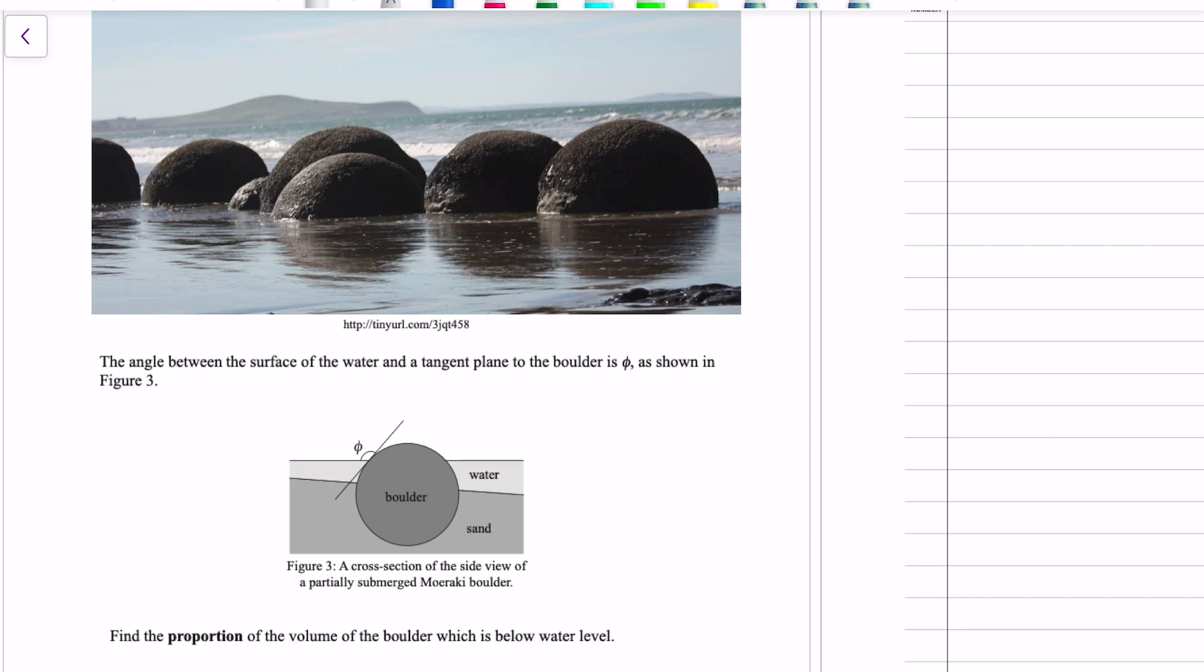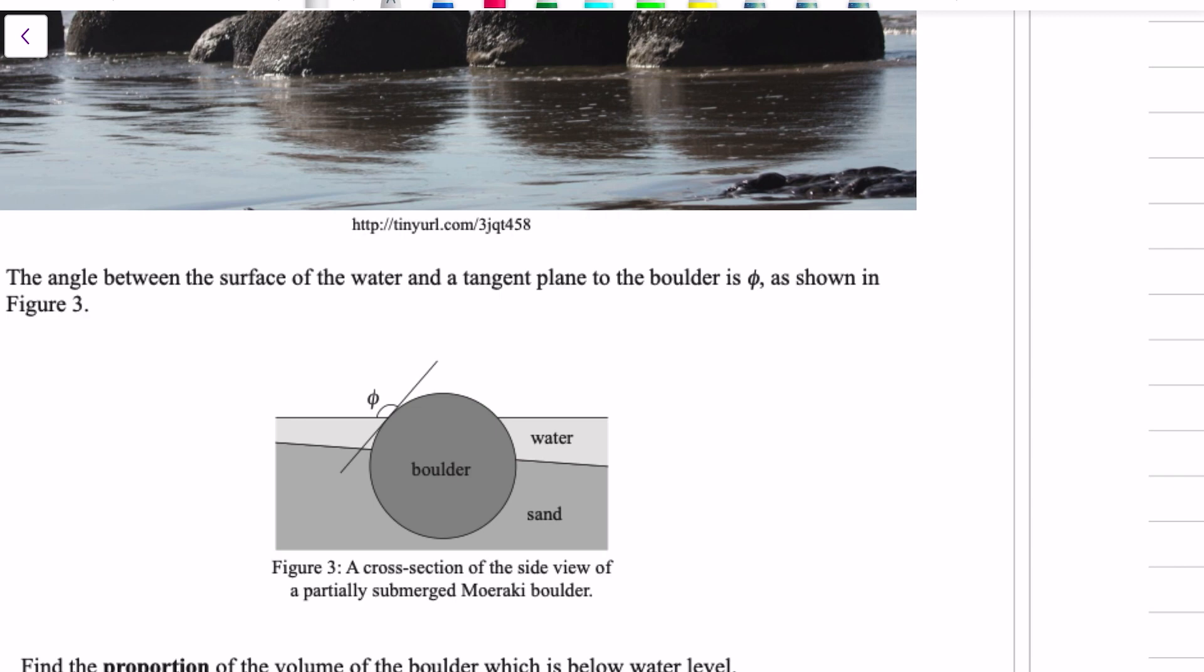If the angle between the water level and the tangent to the sphere is equal to φ. So when I looked at this problem initially I was like, well, do we have enough information to solve this question? Because I would have thought that would mean the answer's in terms of φ. But it turns out we can solve it. So let's define this, give this boulder an equation. So the 2D representation of it, if we just smack a coordinate system right down the middle of it, it's just a circle.